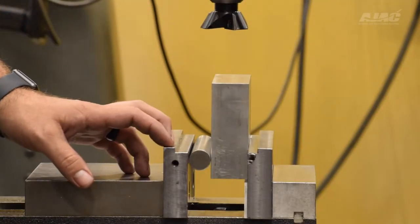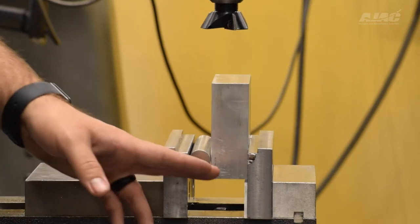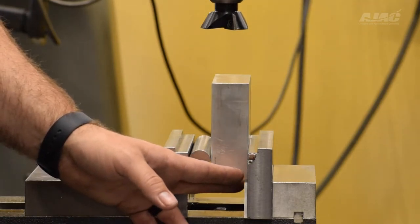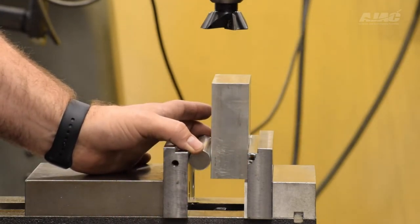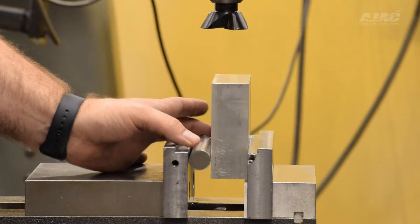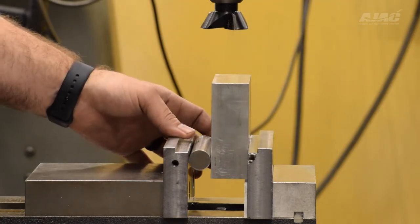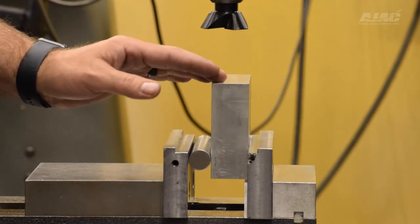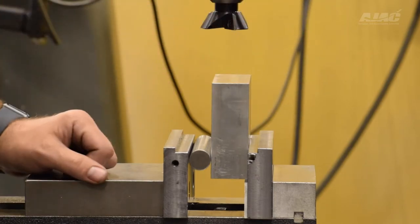So what we have here is this block is currently set on a vise on a Bridgeport manual mill. We have a parallel directly under the hard jaw side of the block, and then we have a pusher, which is a cylindrical piece that basically pushes this in one single contact point up against the hard jaw. That is so that we can machine this face perfectly perpendicular to the face that's getting pushed up against the hard jaw.